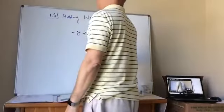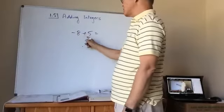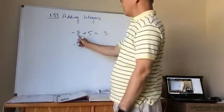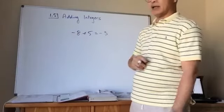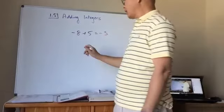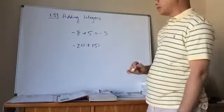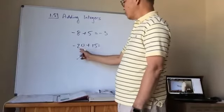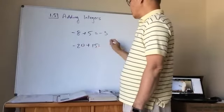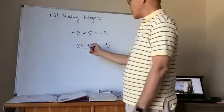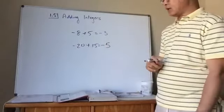For negative 8 plus 5, different signs, subtract to get 3. The larger number is 8 and it's negative, so the answer is negative 3. For negative 20 plus 15, subtract 20 minus 15 to get 5. The larger number was 20 and it's negative, so the answer is negative 5.